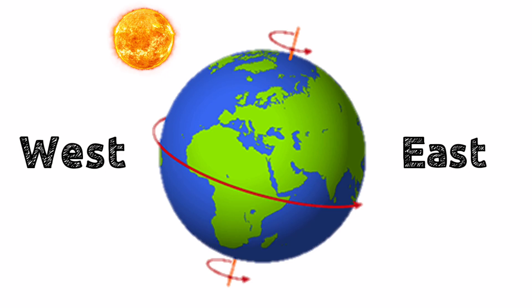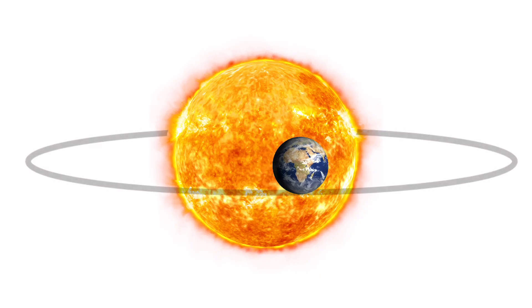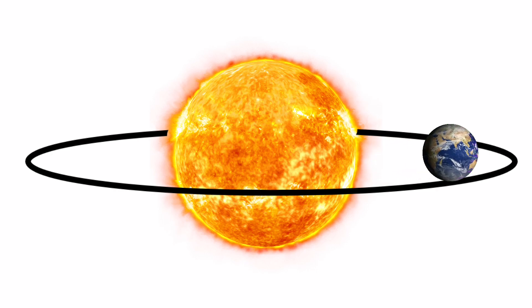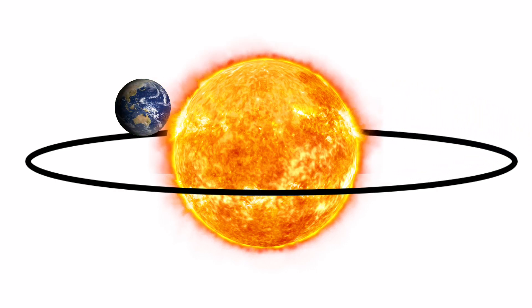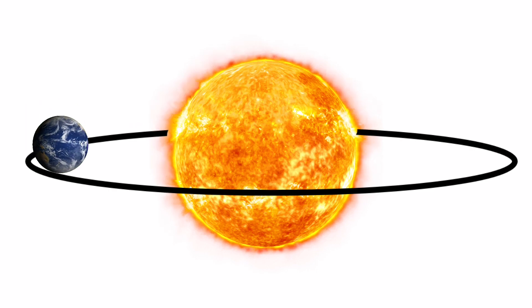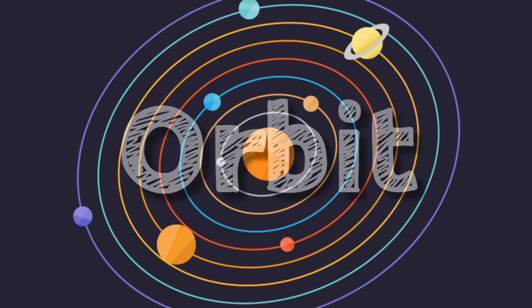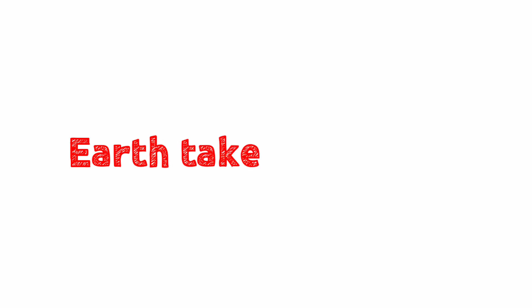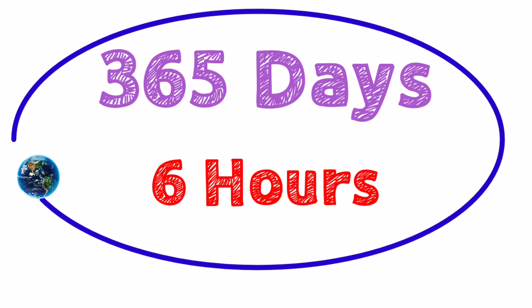The Earth rotates on its axis from west to east, so the Sun appears to move from east to west. Revolution is the movement of the Earth around the Sun. It moves on an imaginary fixed path called the orbit. Earth takes one year, that is 365 days and six hours, to complete one revolution.